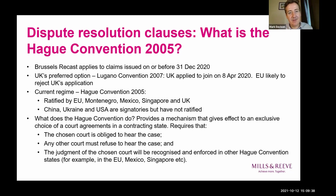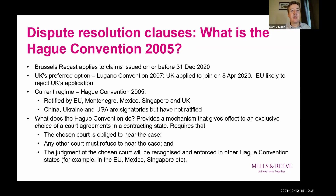Where are we now for any new claims that need to be filed? The UK's preferred approach was to try and join the Lugano Convention, which governs jurisdiction and the enforcement of judgments between the EU and the EFTA states — Switzerland, Iceland and Norway — and operates very similarly to the old Brussels regime. The UK submitted its application to join Lugano back in April last year. The EFTA states agreed, but the EU has not, and the European Commission earlier this year stated it would not recommend accepting the UK's application. That's unlikely to change.